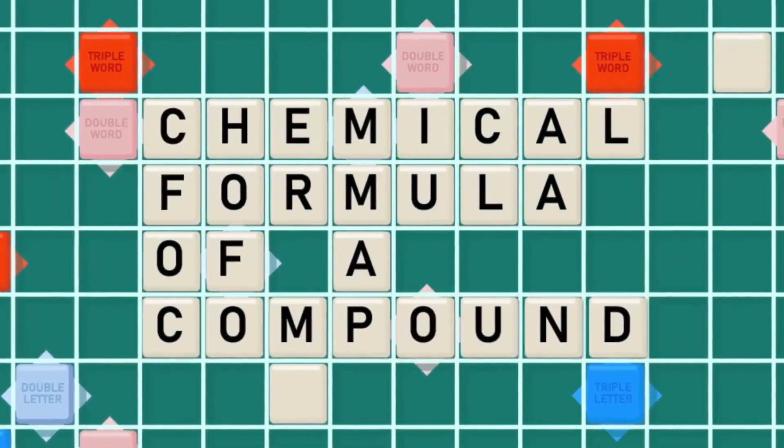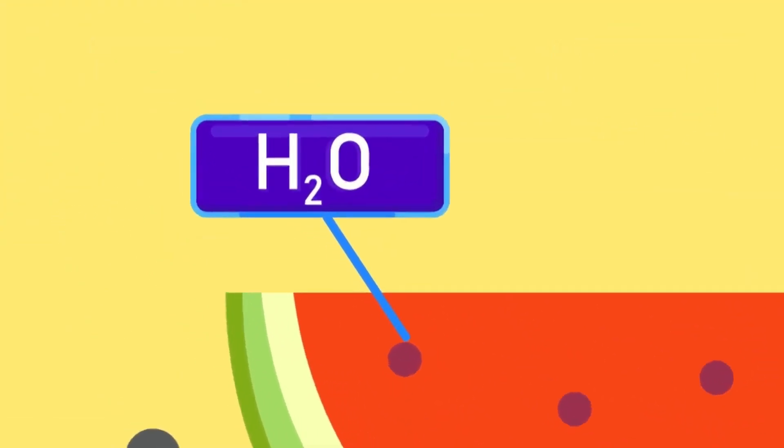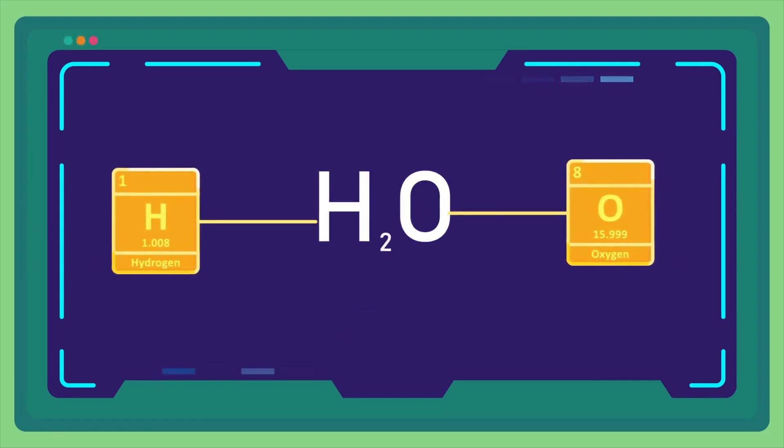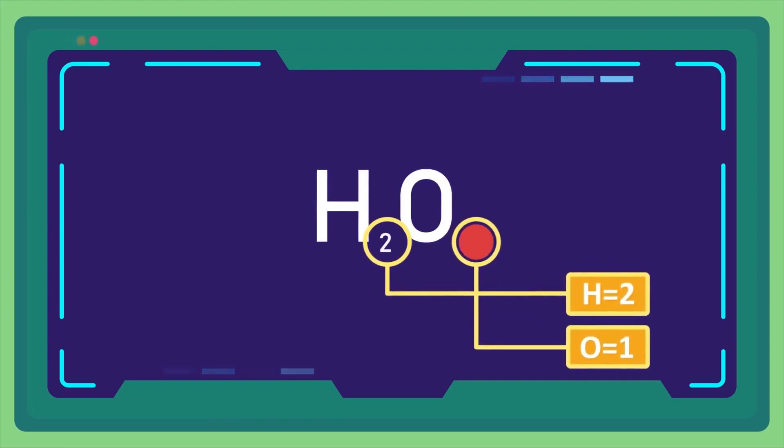Chemical formula of a compound. A chemical formula tells us the types of elements present in a compound and the ratio of different atoms present in a compound. For example, H2O. The H and O tell us the kinds of elements present. And 2 tells us that there are two hydrogen atoms. Oxygen has nothing written with it. This means that only one oxygen atom is present.